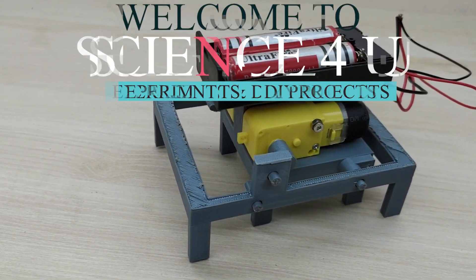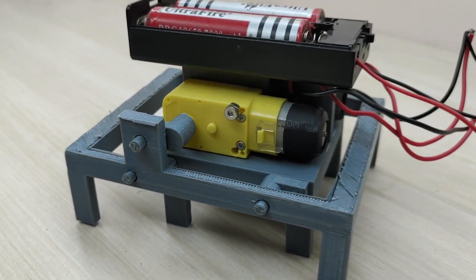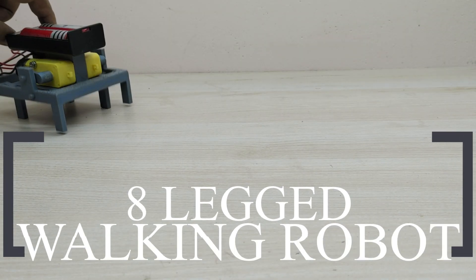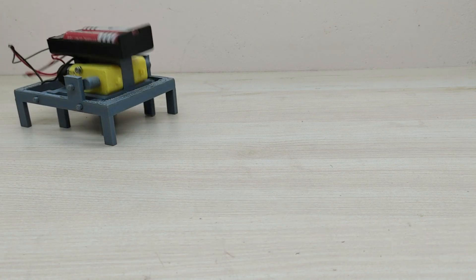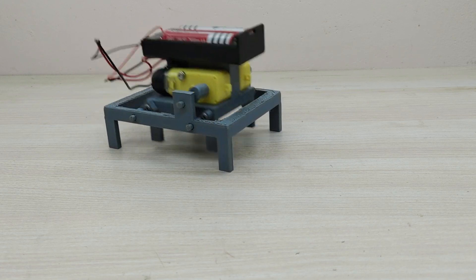Hello dear friends, welcome to another episode of Science For You. Today, I will show you how I made an 8-legged walking robot. This is the simplest version of a walking robot that can be made very easily.